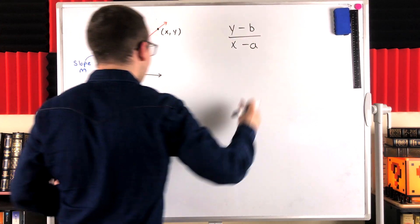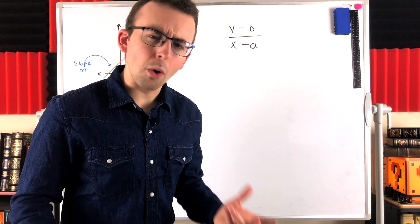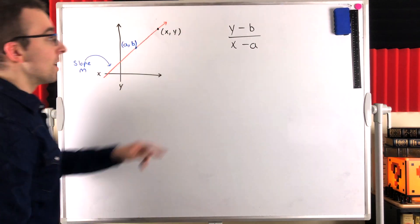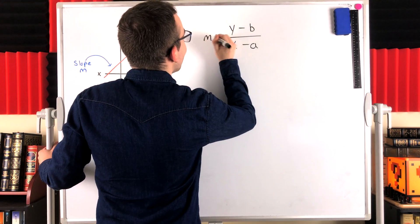So, this is the slope between the two points. So, what must it be equal to? Well, since they're on a line with slope M, this must be equal to M. This must be the slope of the line.